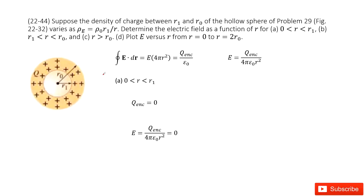Welcome to my channel. I'm Zhang Jingxu. Let's look at problem 44 in chapter 22. Chapter 22 is about Gauss's law. We have a spherical object, and we know the charge density between R1 and R0 is rho, which changes with the variable r. We need to determine the electric field as a function of R.